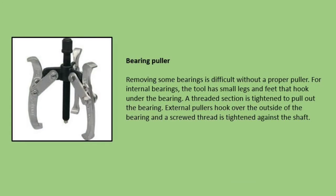Bearing puller. Removing some bearings is difficult without the proper puller. For internal bearings, the tool has small legs and feet that hook underneath the bearing, and a threaded section is tightened to pull out the bearing. External pullers hook over the outside of the bearing and a screw thread is tightened against the shaft.